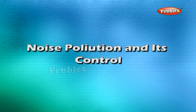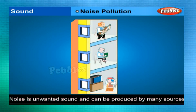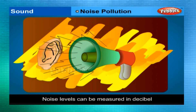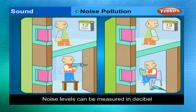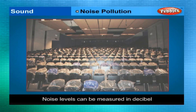Noise pollution and its control: noise is unwanted sound and can be produced by many sources — man's vocal cords, a running engine, a vibrating loudspeaker diaphragm, an operating machine tool, and so on. Noise levels can be measured in decibels. To control noise, it is necessary to prevent it from spreading in all directions. Carpets, draperies, and curtains are porous and absorb sound waves. Soundproofing materials can be fixed on walls and ceilings of rooms to help absorb excess sound.